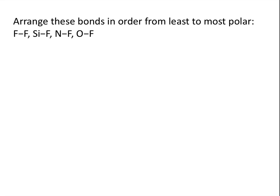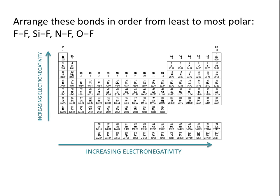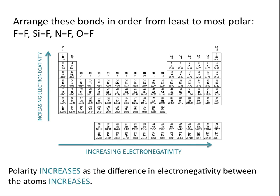Let's look at an example. Arrange these bonds in order from least to most polar: a fluorine-fluorine bond, a silicon-fluorine bond, a nitrogen-fluorine bond, and an oxygen-fluorine bond. Remember that electronegativity increases as you go from left to right across the periodic table and also increases as you go from the bottom to the top, and the polarity of a bond increases as the difference in electronegativity between the atoms increases.